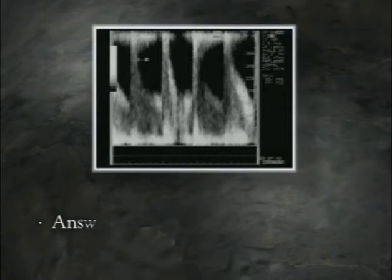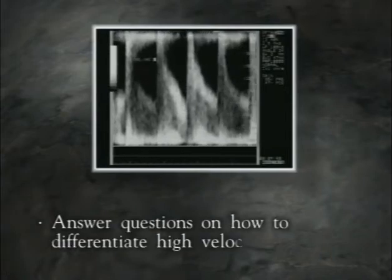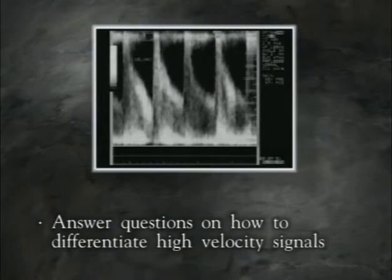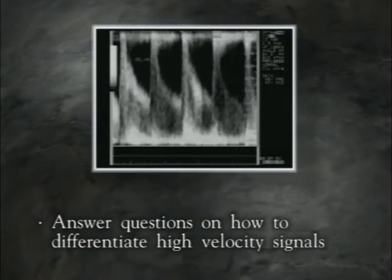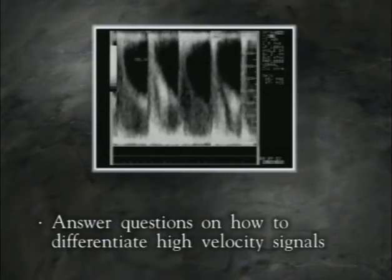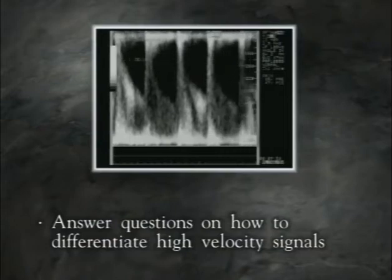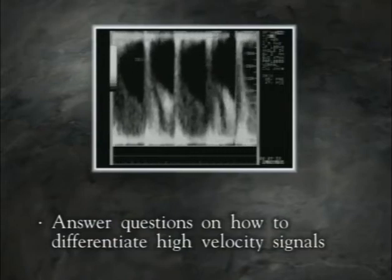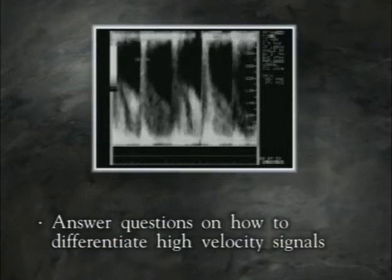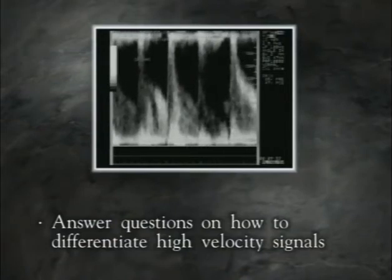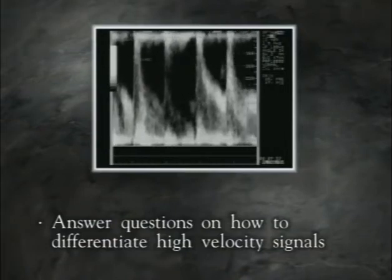We'll also answer questions like: how can I differentiate high velocity signals due to compensatory collateral flow from high velocity signals associated with stenosis?